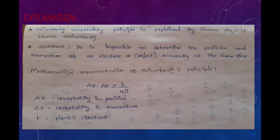The mathematical representation of the Heisenberg uncertainty principle is: delta x into delta p is greater than or equal to h by 4 pi. Delta x is the uncertainty in position, delta p is the uncertainty in momentum, and h is Planck's constant.